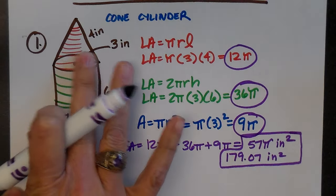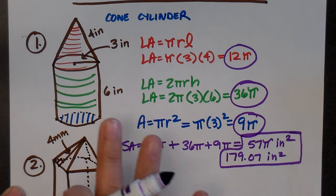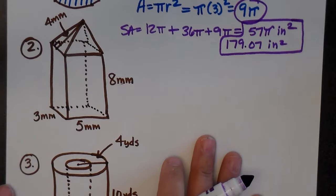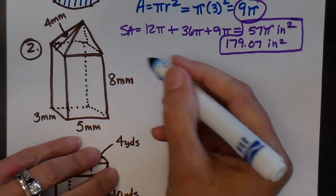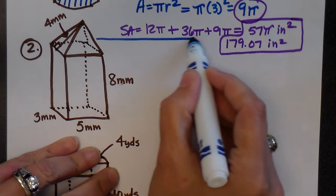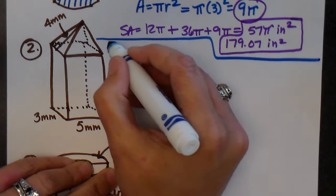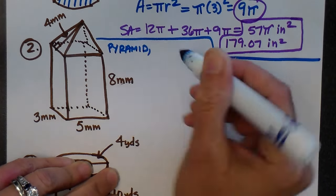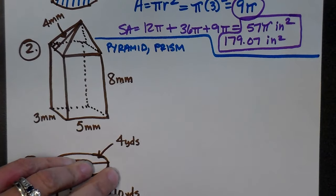The circle on the cone's base is not showing, and we also didn't consider the top circle of the cylinder. Now let's look at the next one — another combination of two figures: a pyramid on top of a rectangular prism.